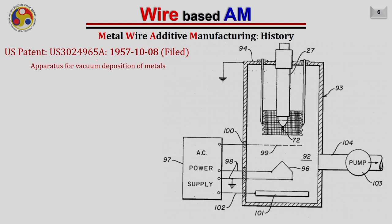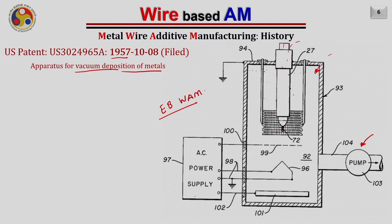A US patent filed in 1957 covered apparatus for vacuum deposition of metals, essentially resembling the electron beam-based wire additive manufacturing process. The entire setup is inside a vacuum created by a pump, with a wire fed from the top that is melted by electrons generated from a cathode. A power supply is applied between the electrode and cathode, pulling electrons at very high velocity toward the substrate.